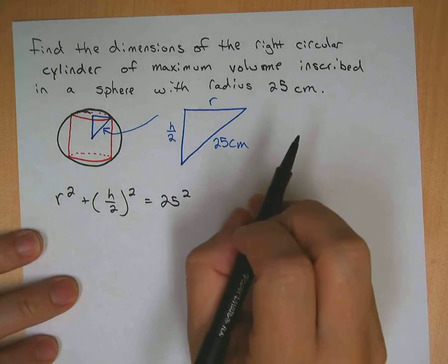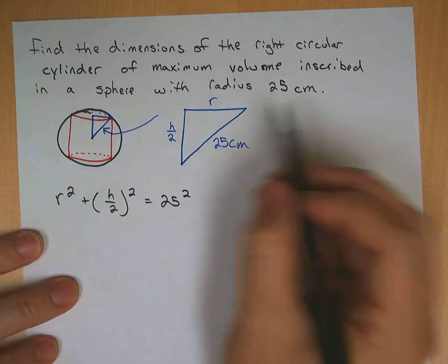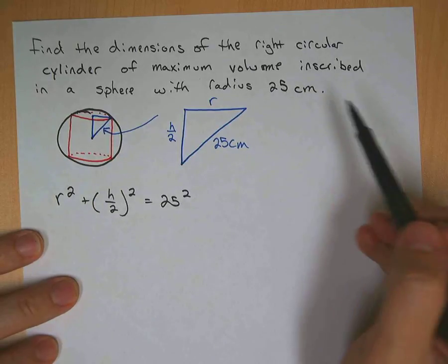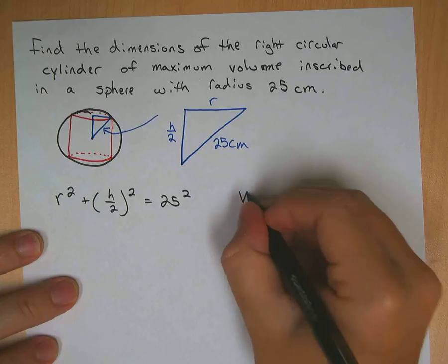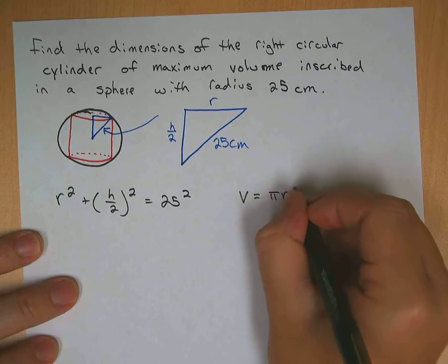Our other relating equation would be of the volume of a right circular cylinder, which is what the question is asking us. That formula, V equals pi R squared H.